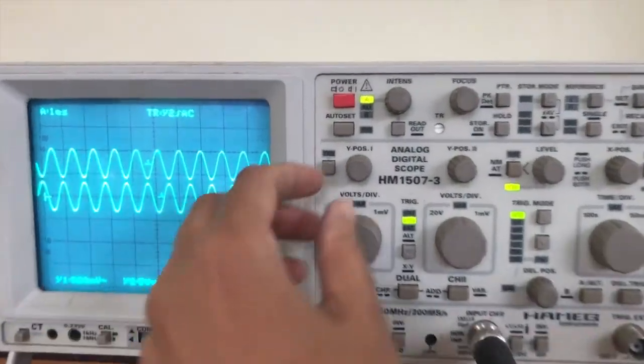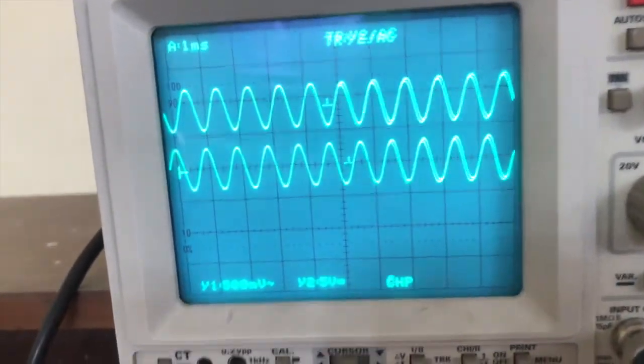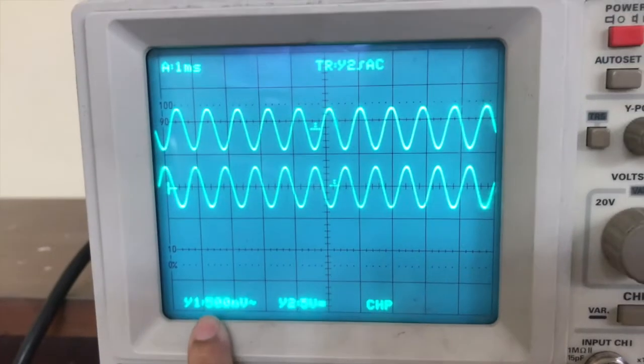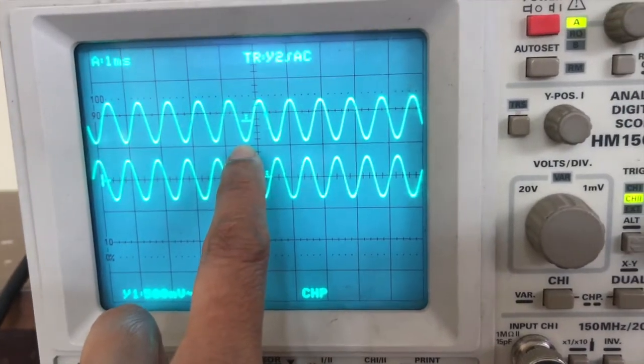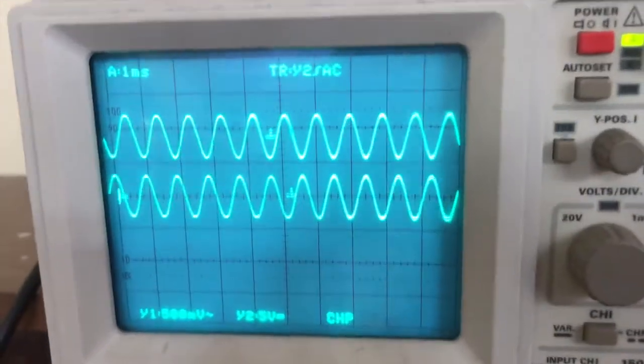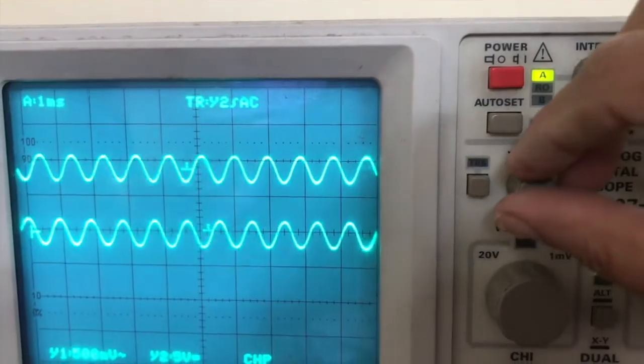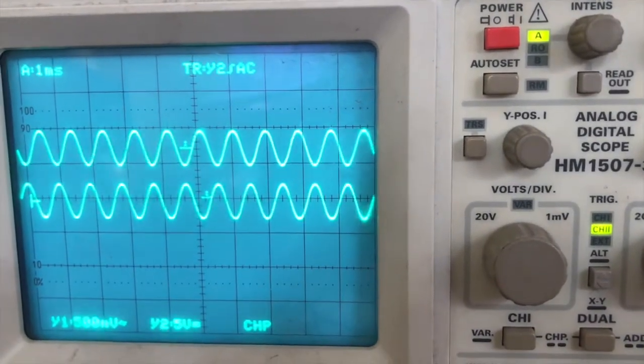It is also connected to the CRO. So we can observe the input waveform which is given to the op amp on the CRO as well. This is the upper waveform, the input waveform and it is set. The setting is 500 millivolts per division. So through function generator we will set it to 500 millivolts.